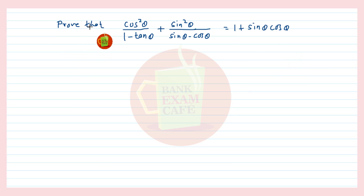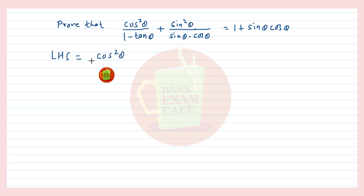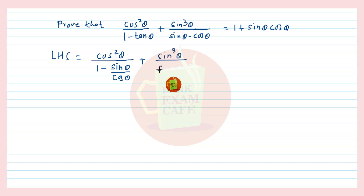Here is the second question on the screen: Prove that cos²θ/(1 − tanθ) + sin³θ/(sinθ − cosθ) = 1 + sinθ·cosθ. We will solve the LHS to show it equals the RHS. Starting directly with the solution: cos²θ/(1 − sinθ/cosθ), and the second term becomes sin³θ/(sinθ − cosθ).